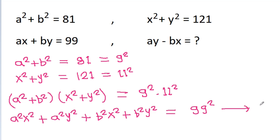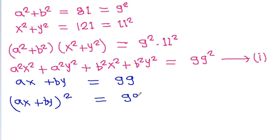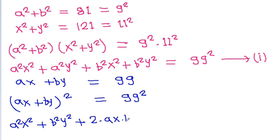We are given that ax plus by is equal to 99. If we square both sides, we get (ax + by)² = 99², which expands to a²x² + b²y² + 2·ax·by = 99². Call this equation 2.